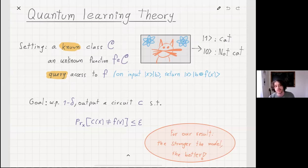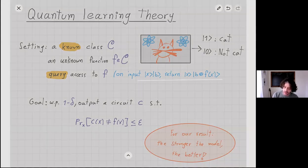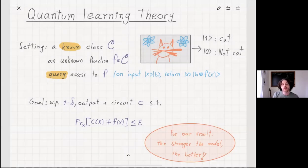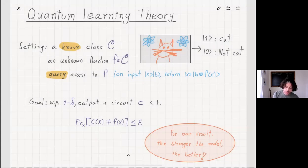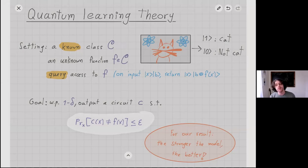The goal, since we can't expect to exactly predict it, is to probably approximately learn it. What do I mean by that? We want with very high probability, think about one minus delta for some small constant delta, to output some circuit that will approximate F very well, and by that I mean on all but an epsilon fraction of the input.